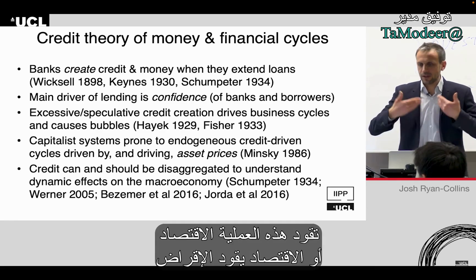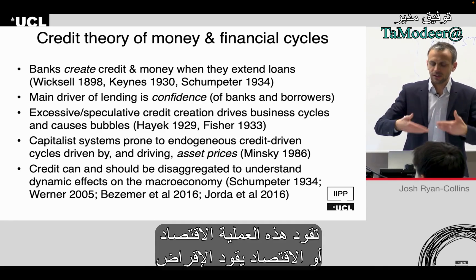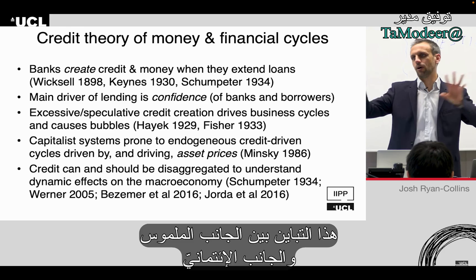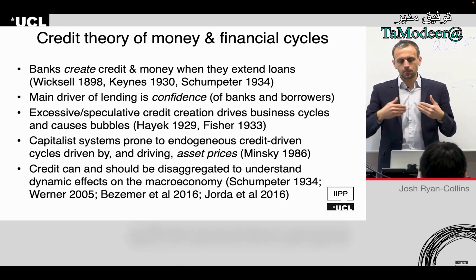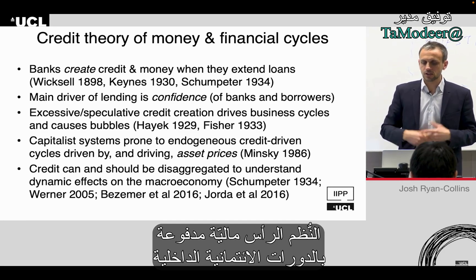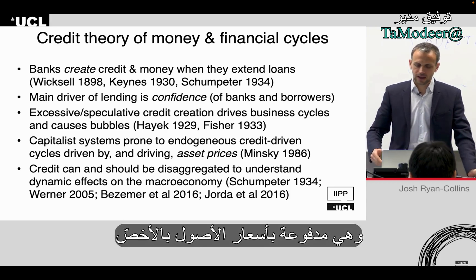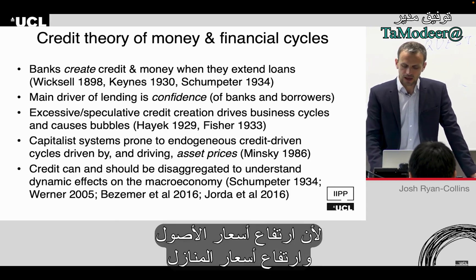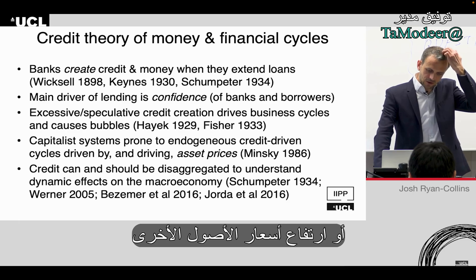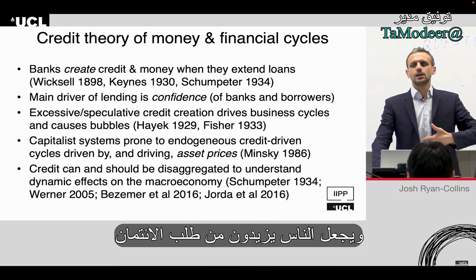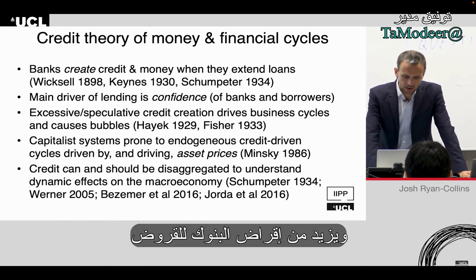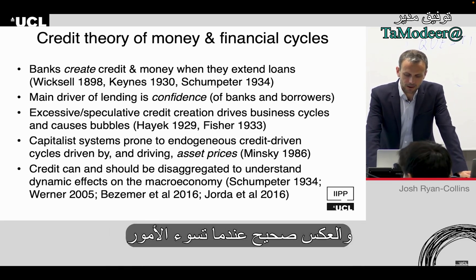The economy drives lending and lending drives the economy — the dichotomy between the real and the financial falls apart under this approach. Capitalist systems are driven by endogenous, credit-driven cycles, particularly driven by asset prices: rising house prices or other asset prices create more confidence, which leads people to demand more credit, leads banks to lend more, and vice versa when things go bad.